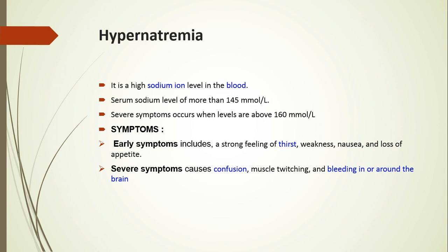Hypernatremia is when excess sodium is present in the body, more than 145 mmol per liter. There are early and severe symptoms. Early symptoms include high thirst, weakness, nausea, and loss of appetite. Severe hypernatremia causes confusion, muscle twitching, or bleeding in or around the brain.